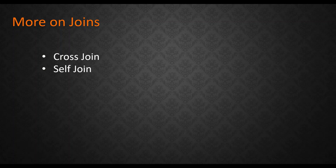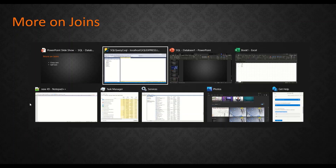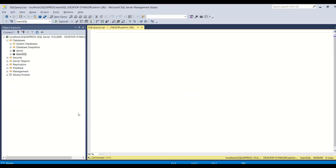Self join is just an extension of the existing joins — inner, left, right, or outer — but it is called a self join because the same table joins with itself. In the case of cross join, there is actually no join column, which is why it is known as a cross join.